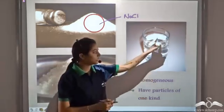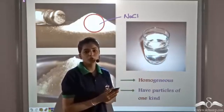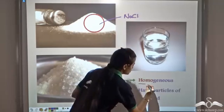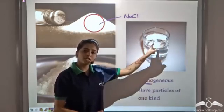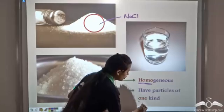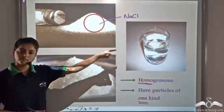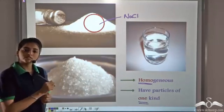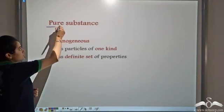And water, as you see, looks uniform — it has the same composition throughout and it is made up of similar water molecules. So such substances are homogeneous. 'Homo' means same. They have the same composition throughout their mass and they are made up of only one kind of particles. So such substances are known as pure substances.